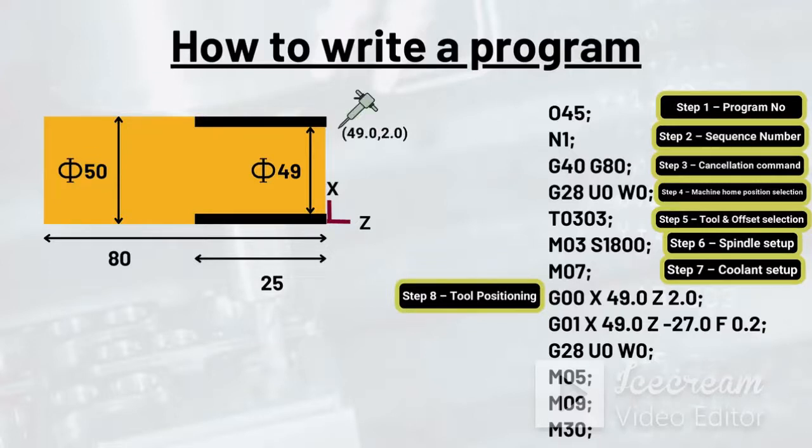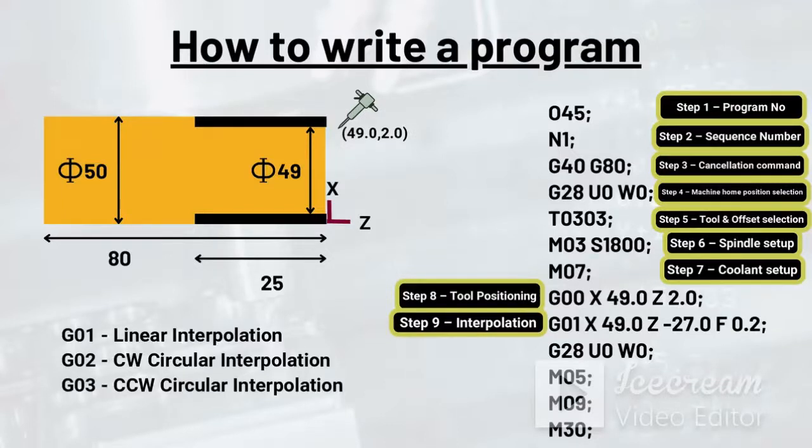G00 X49.0 Z2.0 would be the complete line here. 2.0 unit depth has been taken for initial cut in the Z axis. The next step is the interpolation. In this step we decide the deciding command between G01, G02, and G03. G01 is for linear interpolation, G02 is for clockwise circular interpolation.